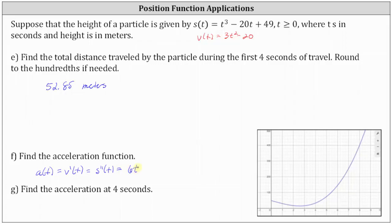The last part, part g, we're asked to find the acceleration at four seconds, which is a of four, which is six times four, which is equal to 24. This measures the change in velocity at four seconds, and therefore the units are meters per second per second, or meters per second squared. I hope you found this helpful.